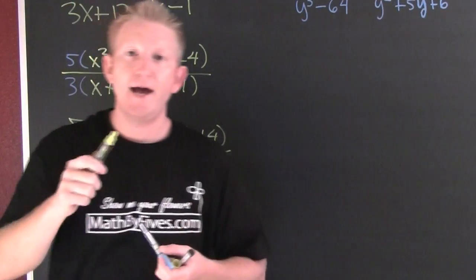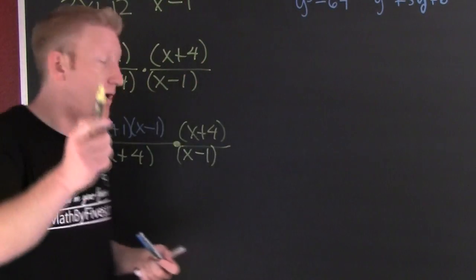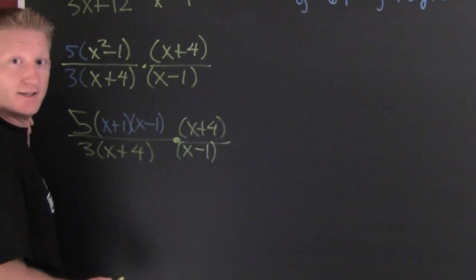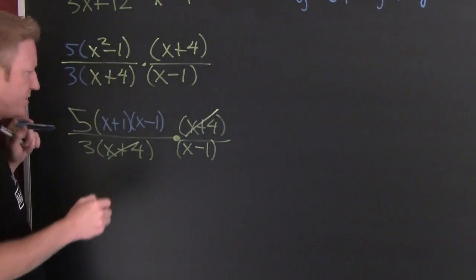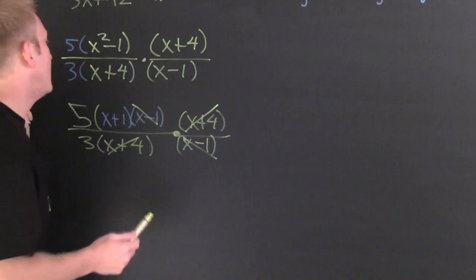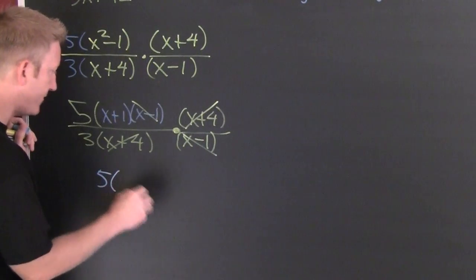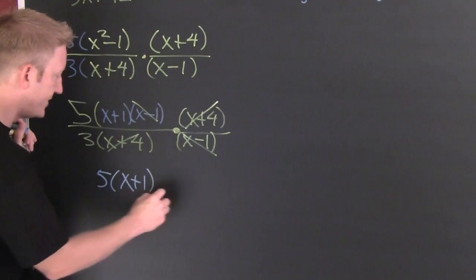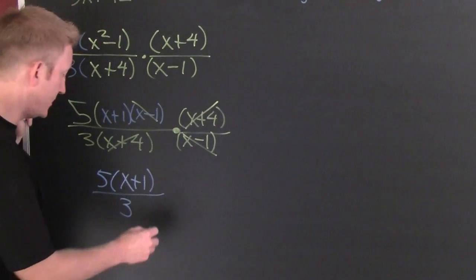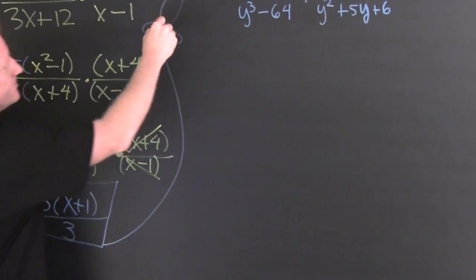If you remember back when we were adding and subtracting fractions — go ahead and catch up on that video too. It may be beneficial if we reduce our like factors ahead of time. Do you see anything that can cancel? After reducing, when it's all said and done and the dust settles, you're going to have five times x plus one, divided by three.